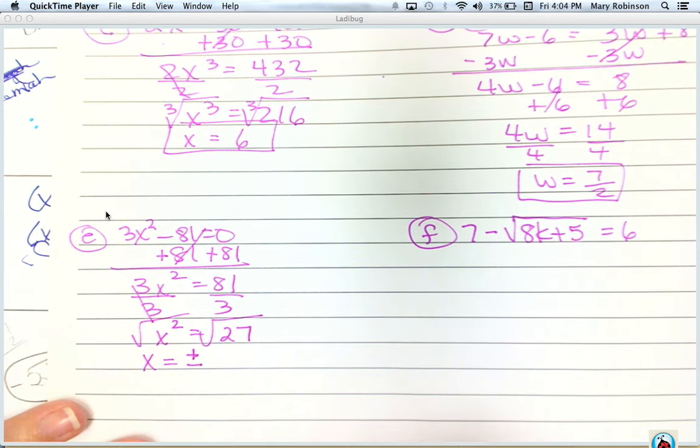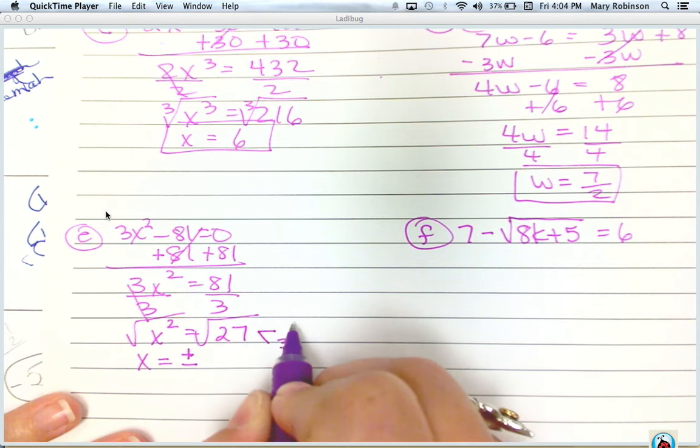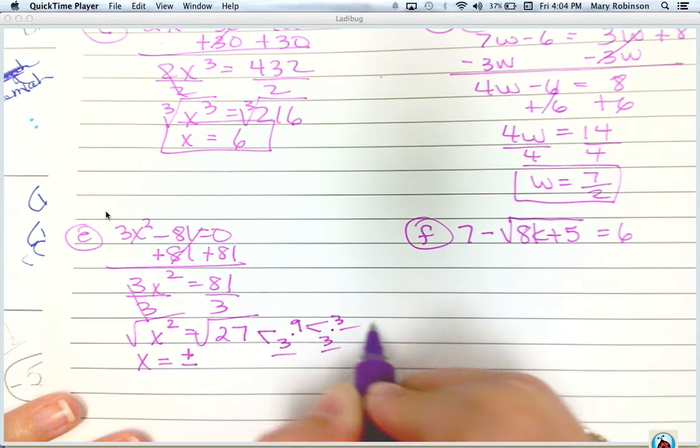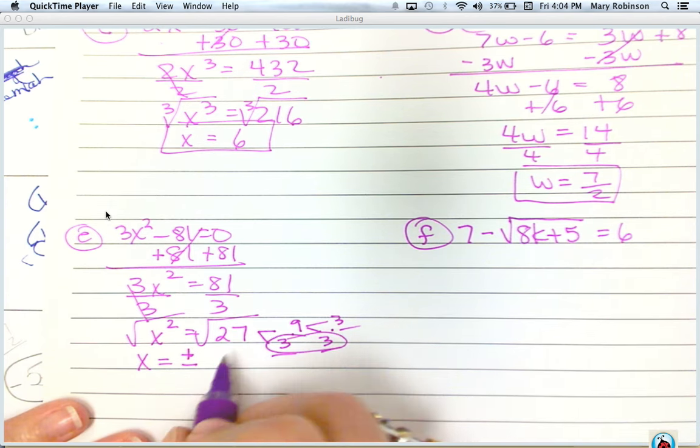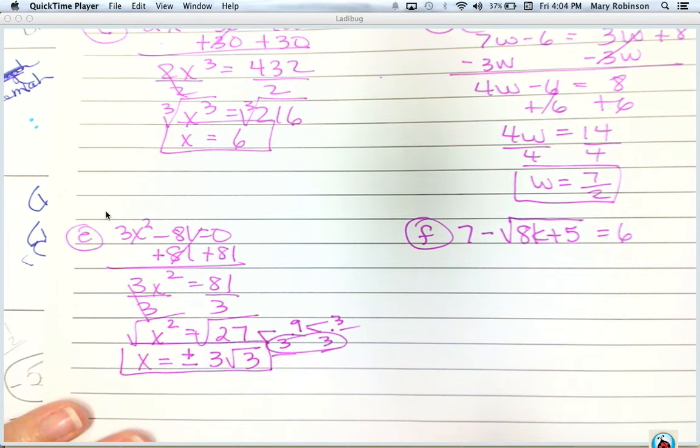So we do need to include the possibility that it could be positive or negative. And then next, we want to break down our 27. And we get 3 and 3 and 3, which is 3 square roots of 3. So make sure it's simplified correctly.